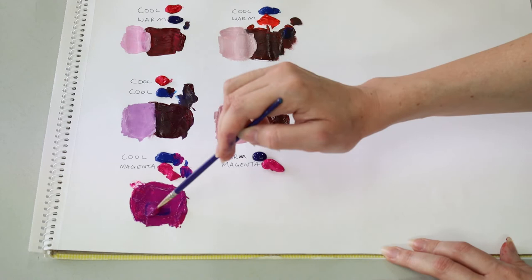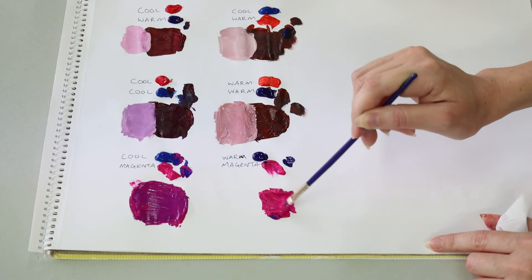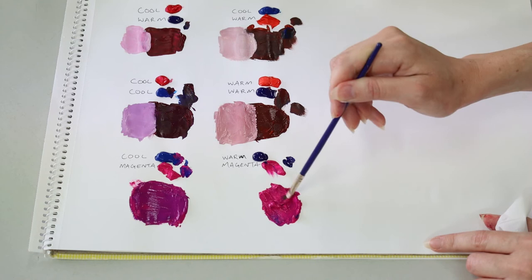Magenta is one of those strange colors that just can't seem to be mixed up like you have to if you're going to use magenta you have to buy magenta. Okay now we're going with the magenta and the warm blue let's see what kind of purple we get here.